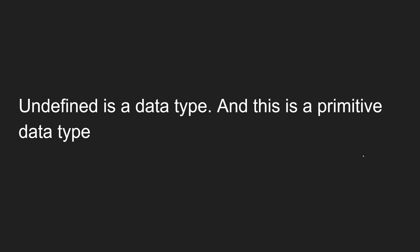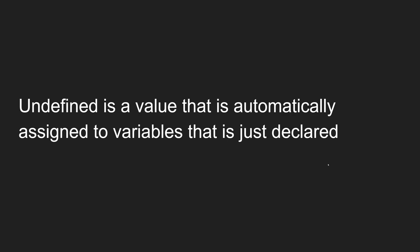If you have seen my JavaScript course you'll already know about primitive data types, but let's brush up. Undefined is a value that is automatically assigned to variables that are just declared — we don't assign it ourselves; JavaScript assigns it automatically to any variable that is only declared.